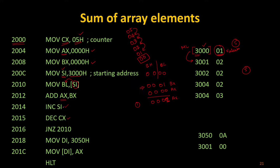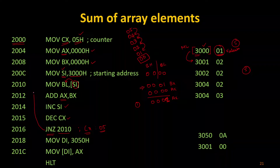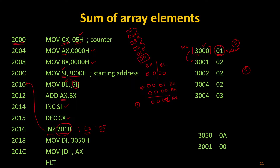This JNZ (Jump Not Zero) instruction is going to verify your CX register. At present the CX register has the value 05, so it is not zero and it is going to jump to memory location 2010. While typing the program I have to note this memory location 2010 and put it here, so the program jumps back to the previous instruction. Unlike normal programming we cannot give a name to a loop — it must be the exact memory location of the instruction we want to jump to.